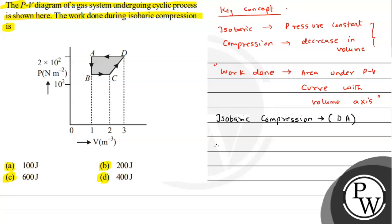So we can say therefore work done will be equals to area under DA. From this, length into breadth, length will be 3 minus 1, will be 2, and if we talk about height, so it will be 2 into 10 raised to 2. So this is the answer to the question, which will be 400 Joules, which will be matched with option D.